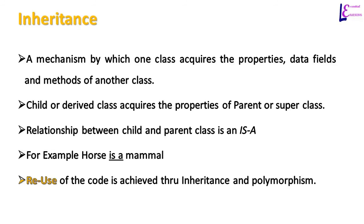Inheritance is the mechanism by which one class acquires the properties, data fields, and methods of another class. A child or derived class acquires the properties of a parent or superclass. The relationship between a child and parent class is an "is-a" relationship. For example, a horse is a mammal — here, mammal is the superclass.